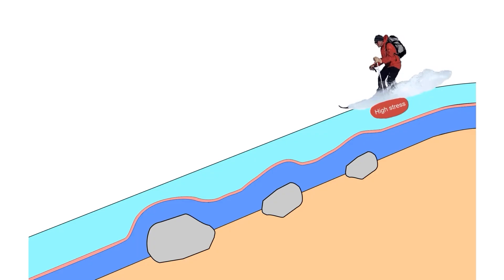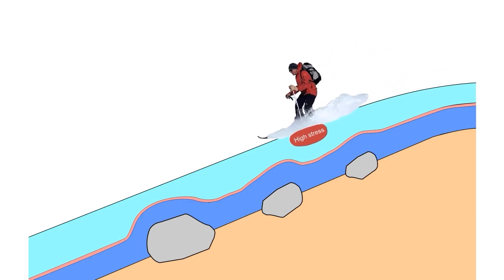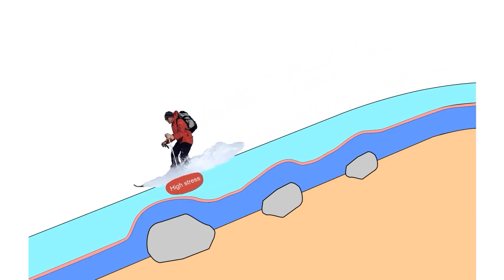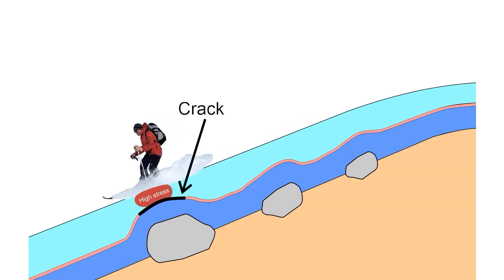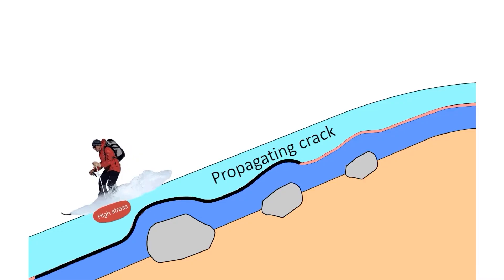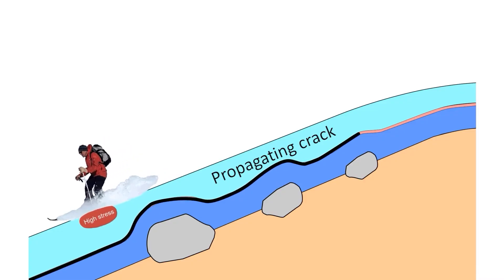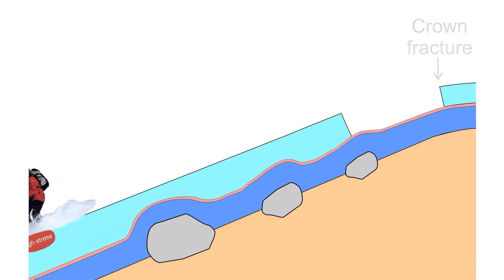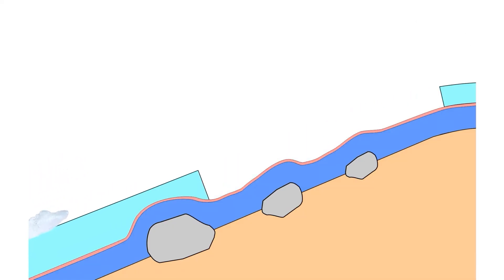The moving rider stresses the upper snowpack, as shown by the red bulb. The stress under the skier causes a brittle crack shown in black. If the crack is longer than what is called a critical crack length, the crack propagates beyond the stressed area under the rider. It propagates in the weak layer away from the trigger point, including up the slope. The crown and other boundaries of the slab fracture, releasing the slab, which slides down the slope.